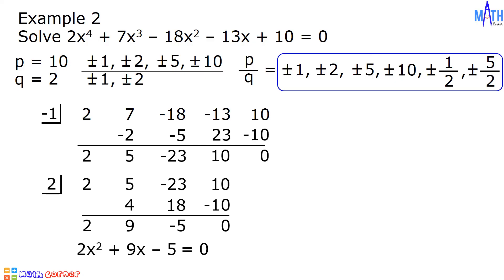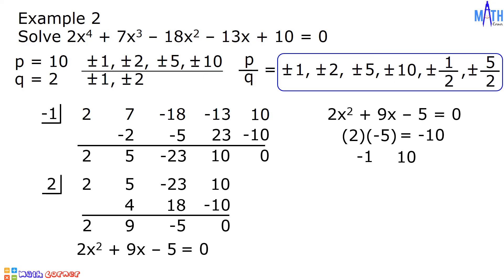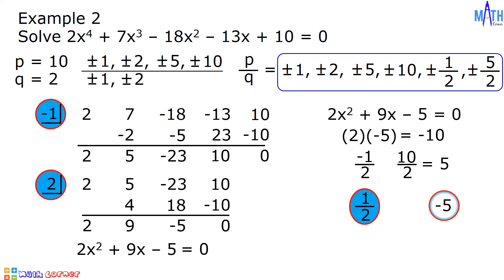Let us use a shortcut in finding the roots of this quadratic equation. Let us multiply the values of a and c: 2 times negative 5 equals negative 10. Then let us find factors of negative 10 that when added equal 9. The factors we need are negative 1 and positive 10. Next, let us divide negative 1 and positive 10 by the value of a: we have negative 1 over 2 and positive 10 over 2. Negative 1 over 2 is already in lowest terms; 10 over 2 equals 5. Let us change the signs: negative 1 over 2 becomes positive 1 over 2, and positive 5 becomes negative 5. The roots are negative 1, positive 2, positive 1 over 2, and negative 5.